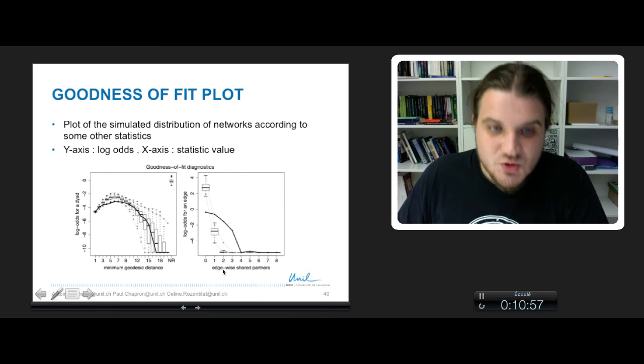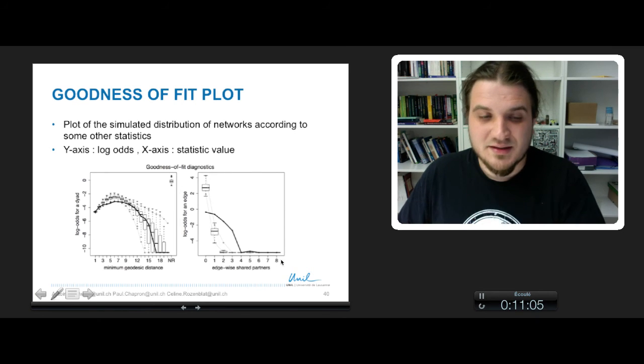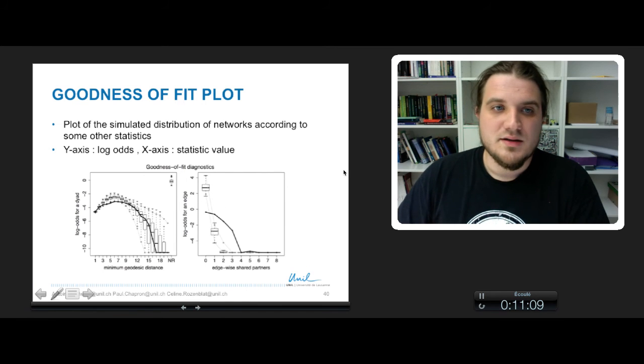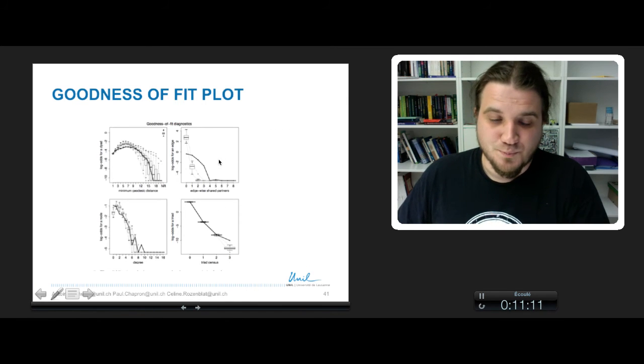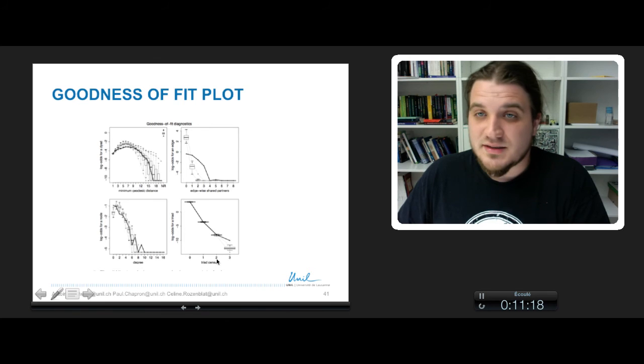But for the edgewise shared partners, the fit is less satisfactory. It's good around here because the box plots are very thin, but around here the fit is not good. There are some other statistics that are used, for example, degree distribution and triad census.